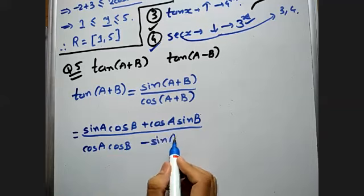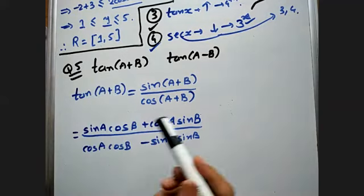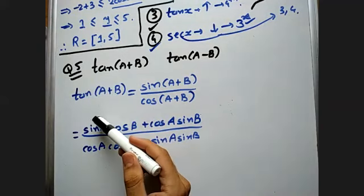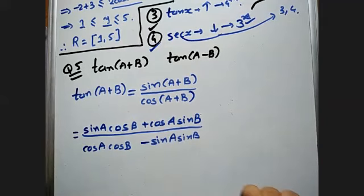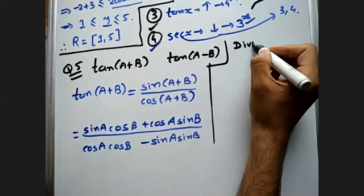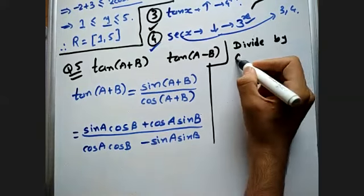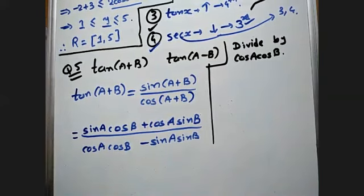Now we have to remember one key step. The formula of tan(A+B) must be only in terms of tan. So if I divide sine by cosine I will get tan. I will divide both numerator and denominator by cos A into cos B.